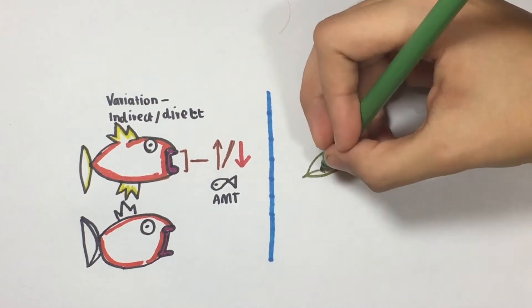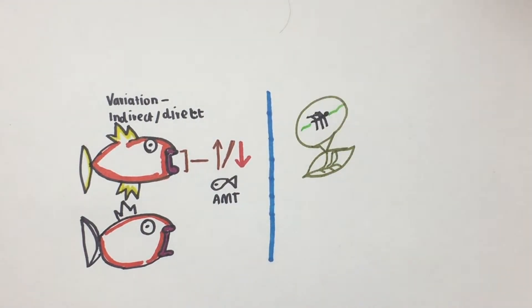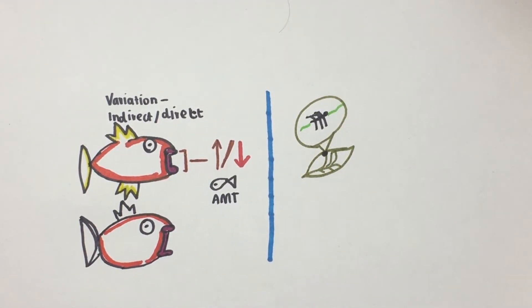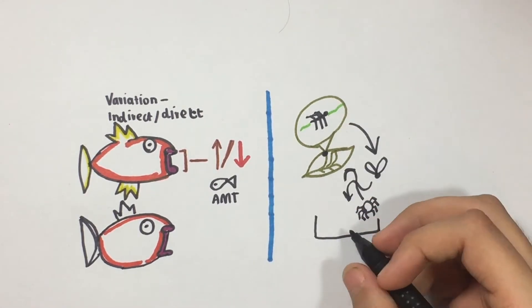However, prey or grazers often have diverse and other interactions and roles in an ecosystem that can be further altered, and this causes an indirect effect.